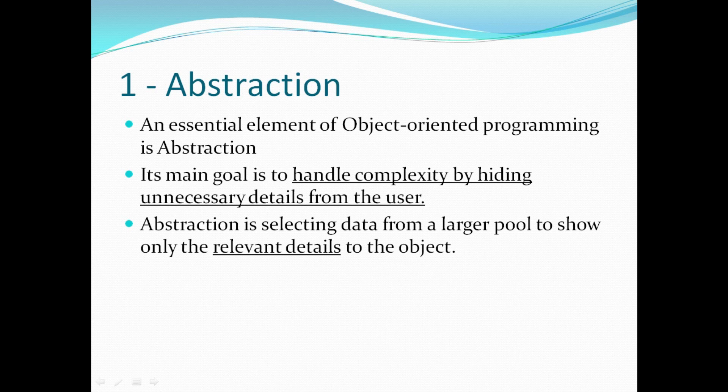The first concept is abstraction. Abstraction is an essential element of object oriented programming. Its main goal is to handle complexity by hiding unnecessary details from the user. Abstraction is selecting data from a large pool to show only the relevant details to the object. In abstraction we just show the relevant details to the user and hide the irrelevant data.